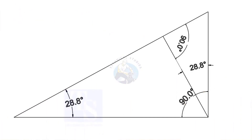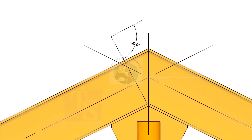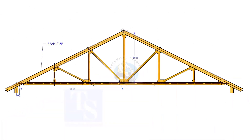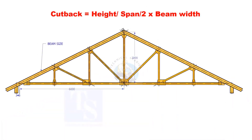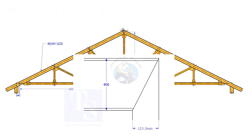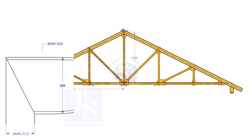Basically, the formula is based on the theory that opposite angles are equal. Here, the cutback equals truss height divided by half span, multiplied by the actual width of the girder. Proportionate to the span and the height, the cutback for a 400mm wide beam is 133.3mm.